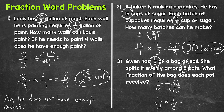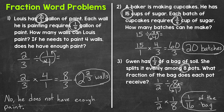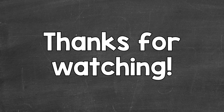Now we can multiply: one times one gives us one, and two times eight gives us 16. So our answer is one-sixteenth. What fraction of the bag will each pot receive? One-sixteenth of the bag. So there you have it — some examples of fraction word problems involving multiplication and division. I hope that helped. Thanks so much for watching.